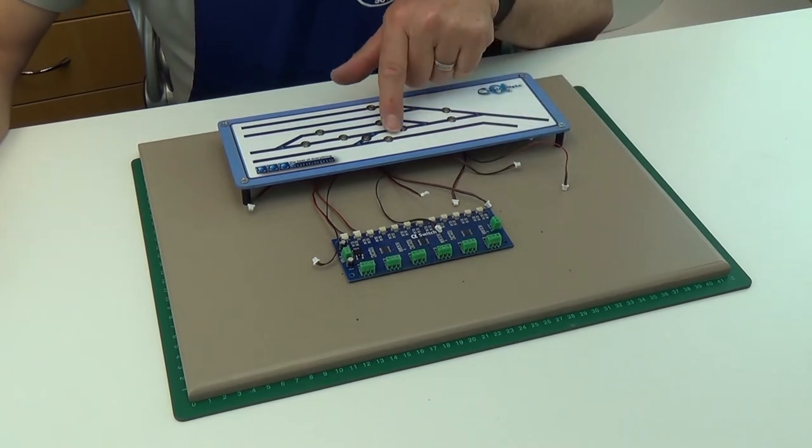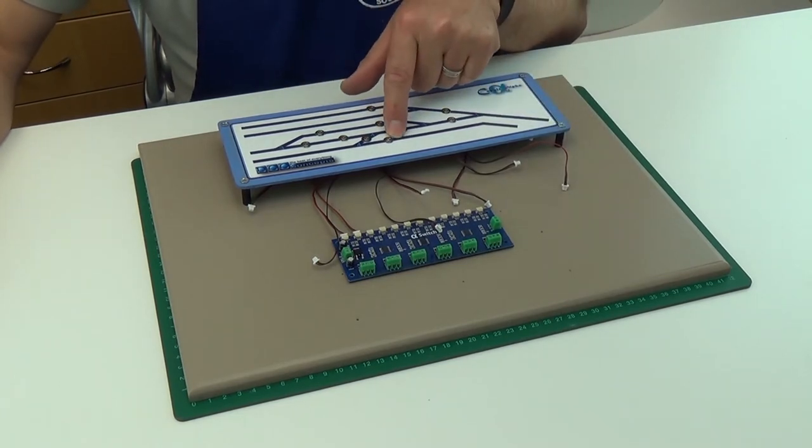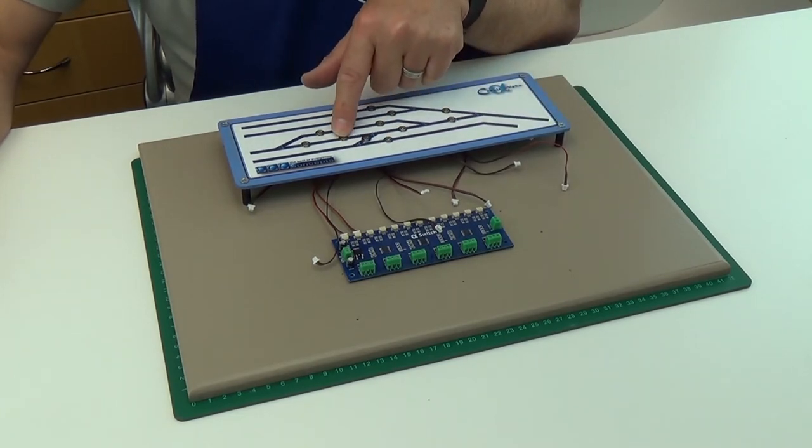Here we have a crossover. The point motors themselves are connected as a pair on the layout, and the idea is to allow either of the two main line buttons to set the points to straight, and the single button in the middle to set both points to crossover.